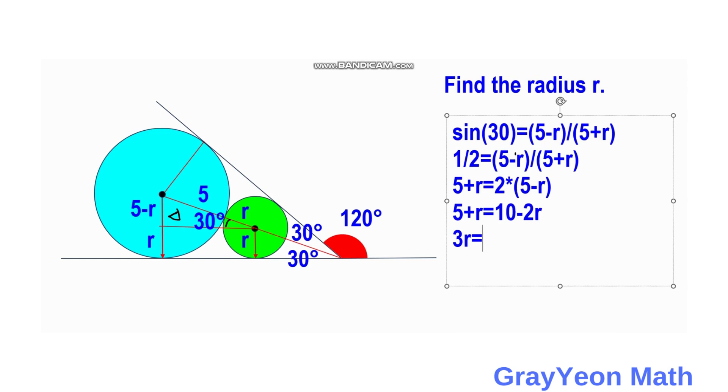If you put the 5 to the right-hand side, 3R equals 5. Therefore, R is equal to 5 divided by 3, or 5 thirds centimeters. That is our answer.